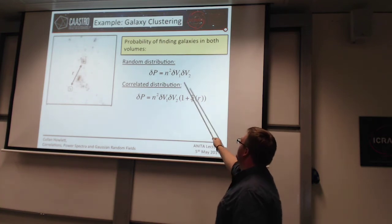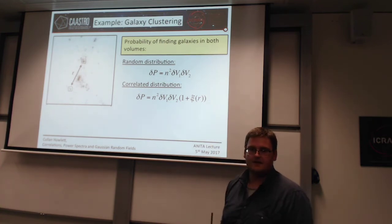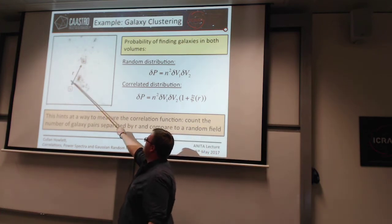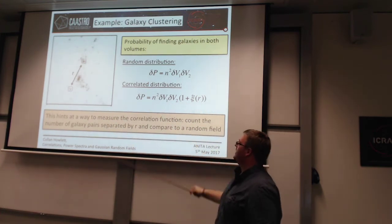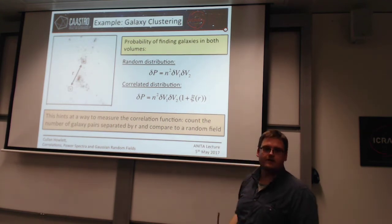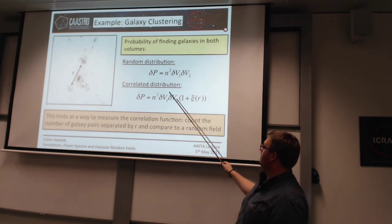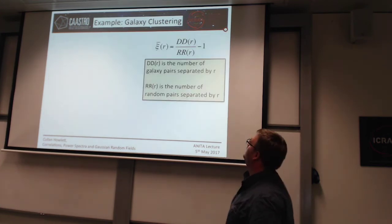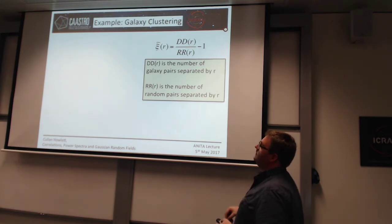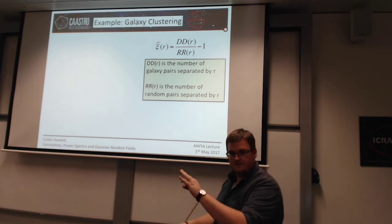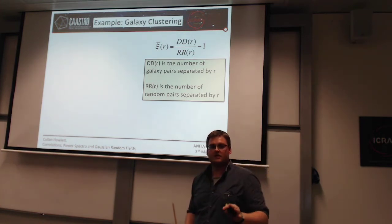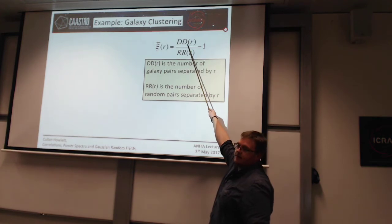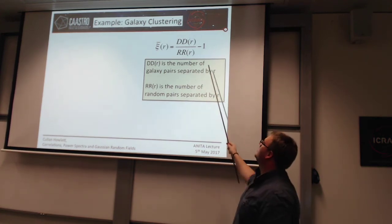There's a neat way of calculating the correlation function from this. Basically you count how many galaxies are separated by distance r — this gives you your DD count — then you divide that by how many random points would be found at that distance r. If you naively divide DD by RR, you get one plus the correlation function. So here I've written an estimator for the correlation function: set up your data on a field, generate a random field matching the same coverage but with points placed randomly, count how many are separated by some distance in both, then subtract one to get the correlation function.